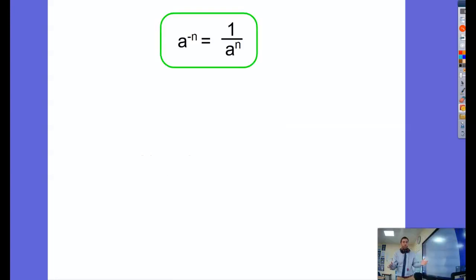Here is the rule for negative exponents. Any number to the power of minus n is going to be 1 over the positive power of that.